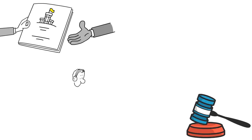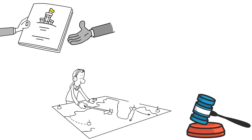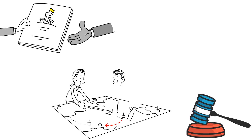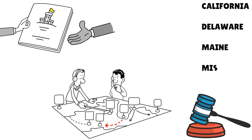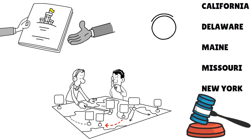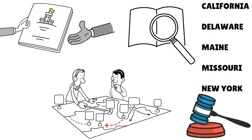Currently, there are only five states that require an LLC to have an operating agreement in place for compliance: California, Delaware, Maine, Missouri, and New York. So it's really important to clarify things in the operating agreement.